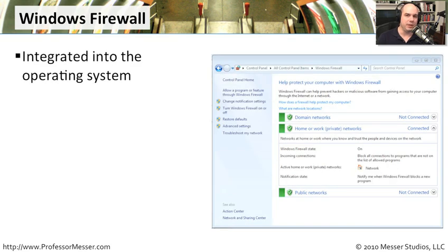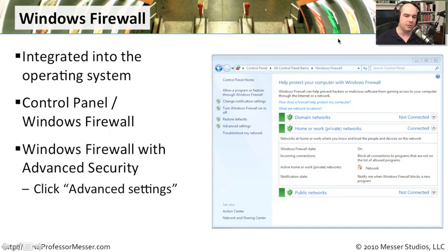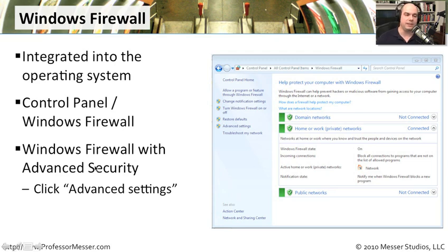One really nice thing about the Windows Firewall is that it's integrated into the operating system, which gives us a different perspective. Because it's on the operating system, it knows exactly what applications are able to communicate out to the internet and which are not. You can access the Windows Firewall from the Control Panel — there's an option inside for the Windows Firewall that pops up a window for turning different configurations on and off.